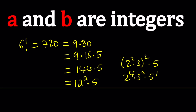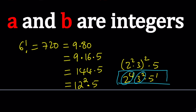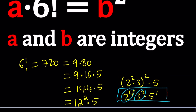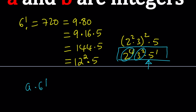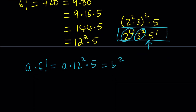Obviously, this is the more number-theoretic way to do it. We notice that 12 squared is a perfect square. Now, we want to multiply this number by a, which is an integer, and we still want the result to be a perfect square. As is, 6 factorial isn't a perfect square, but we can easily make it one. For example, if you just multiply it by 5, then you'll have 5 squared and it'll be a perfect square — but that's not the only number. So, what I need to worry about is a times 5: how can I make that a perfect square?